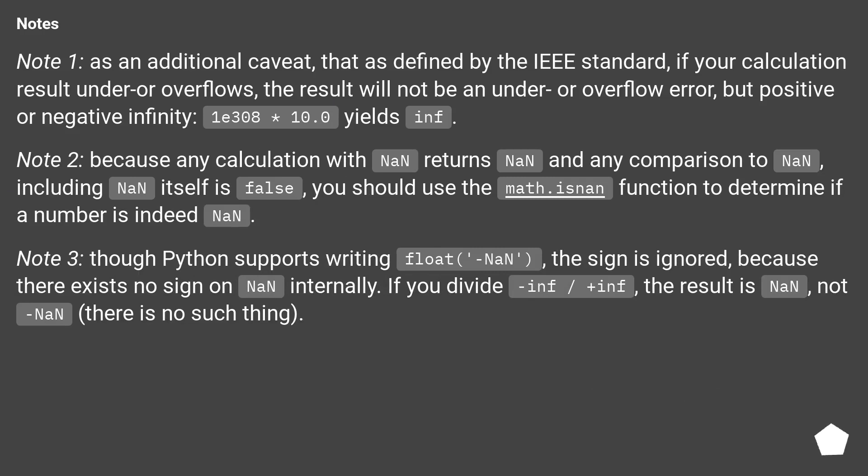Notes. Note 1, as an additional caveat, that is defined by the IEEE standard, if your calculation result under or overflows, the result will not be an under or overflow error, but positive or negative infinity. 1E308 times 10.0 yields inf.